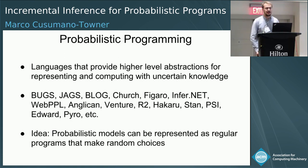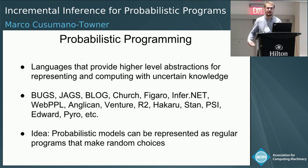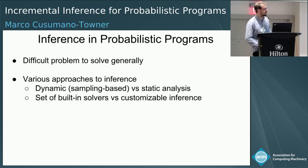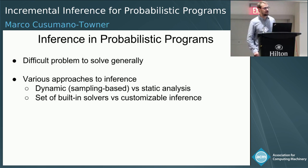One of the core ideas behind a lot of recent work in probabilistic programming is that probabilistic models can be represented simply by regular programs that also make random choices — in other words, that sample random numbers. However, inference in probabilistic programs remains a very difficult problem. Even inference in more classical frameworks like Bayesian networks can be very difficult, and the problems only become more difficult with probabilistic programs.